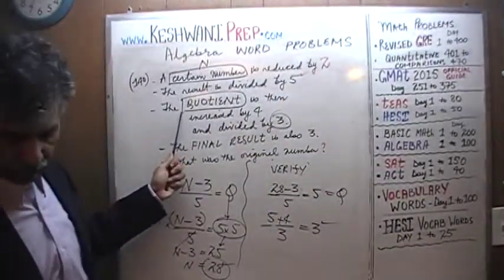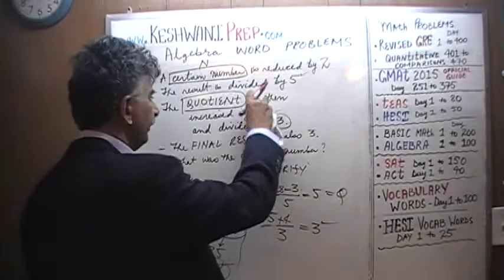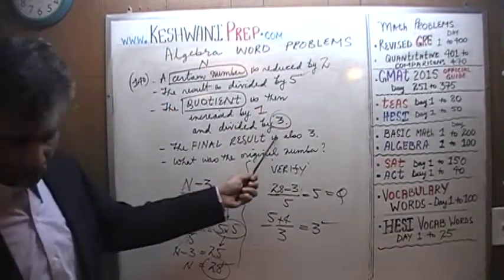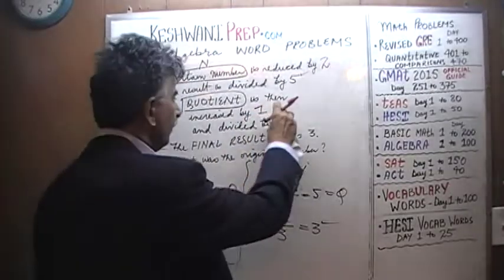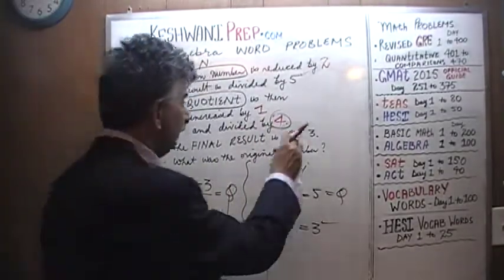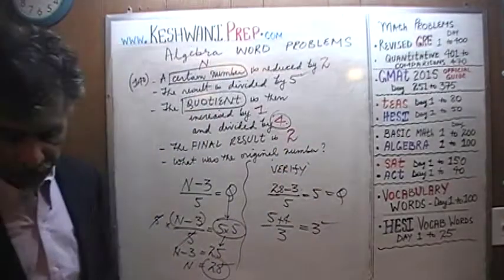The result is then increased by 5. The quotient, we are told, is then increased by 1, not 4. It is increased by 1 and divided by 4. So we are told that if we do all that, the final result is 2.